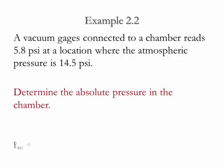The vacuum pressure is equal to the atmospheric pressure minus the absolute pressure. We are looking for the absolute pressure, so we solve this equation for the absolute pressure, which is equal to the atmospheric pressure minus the vacuum pressure.